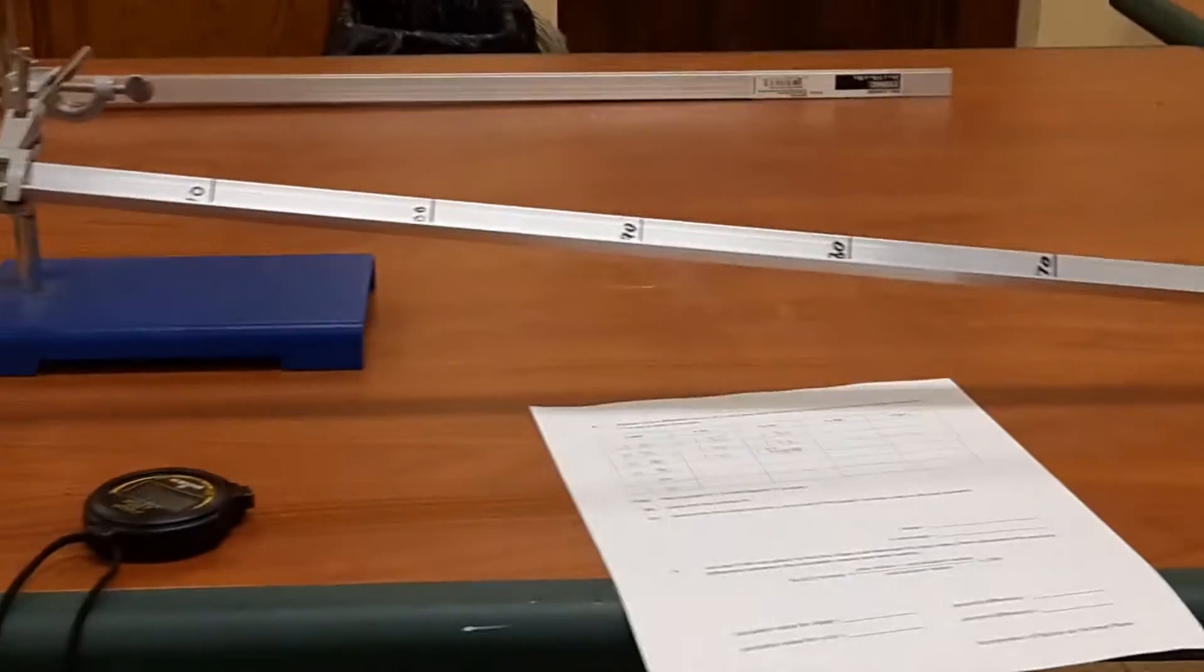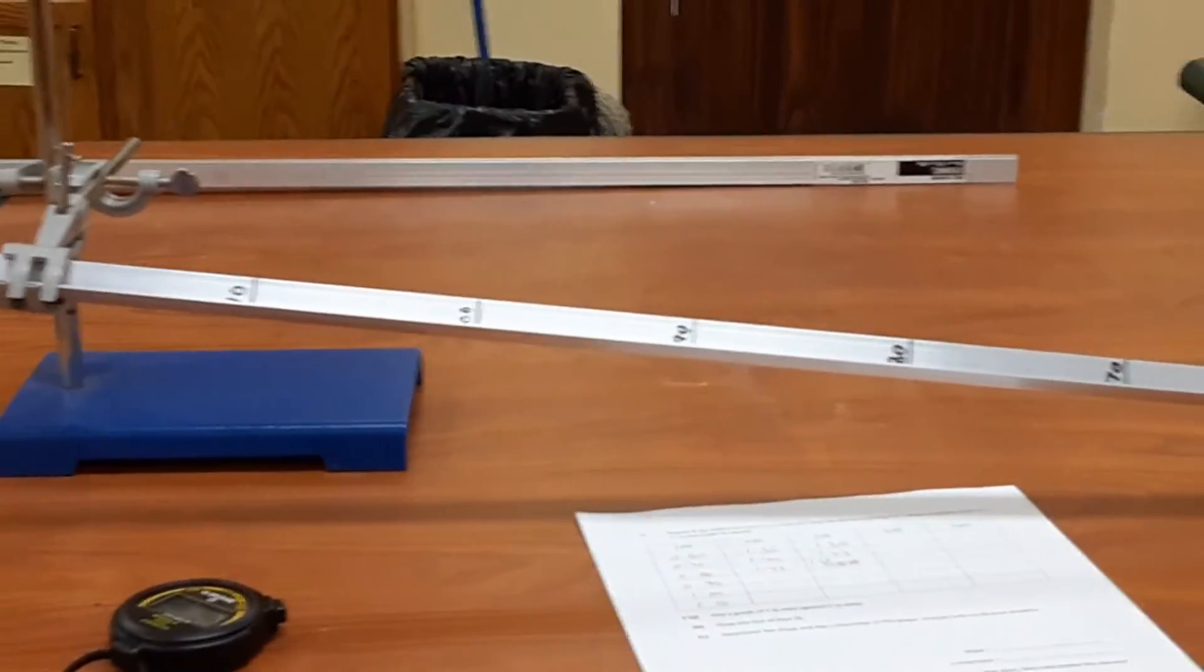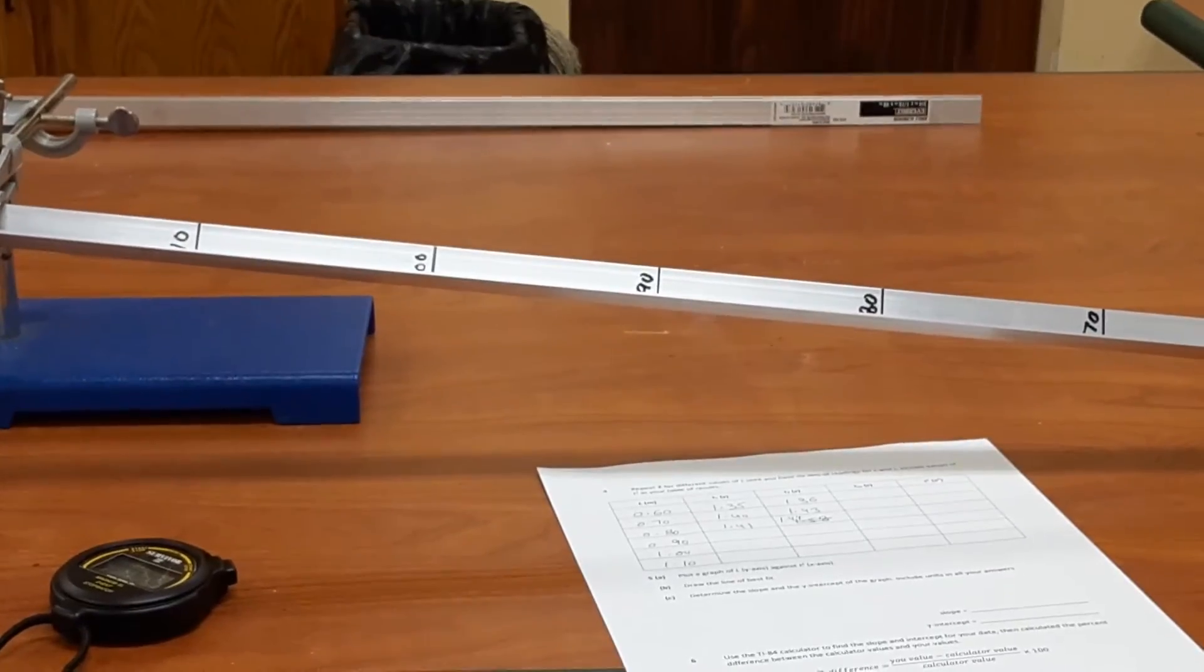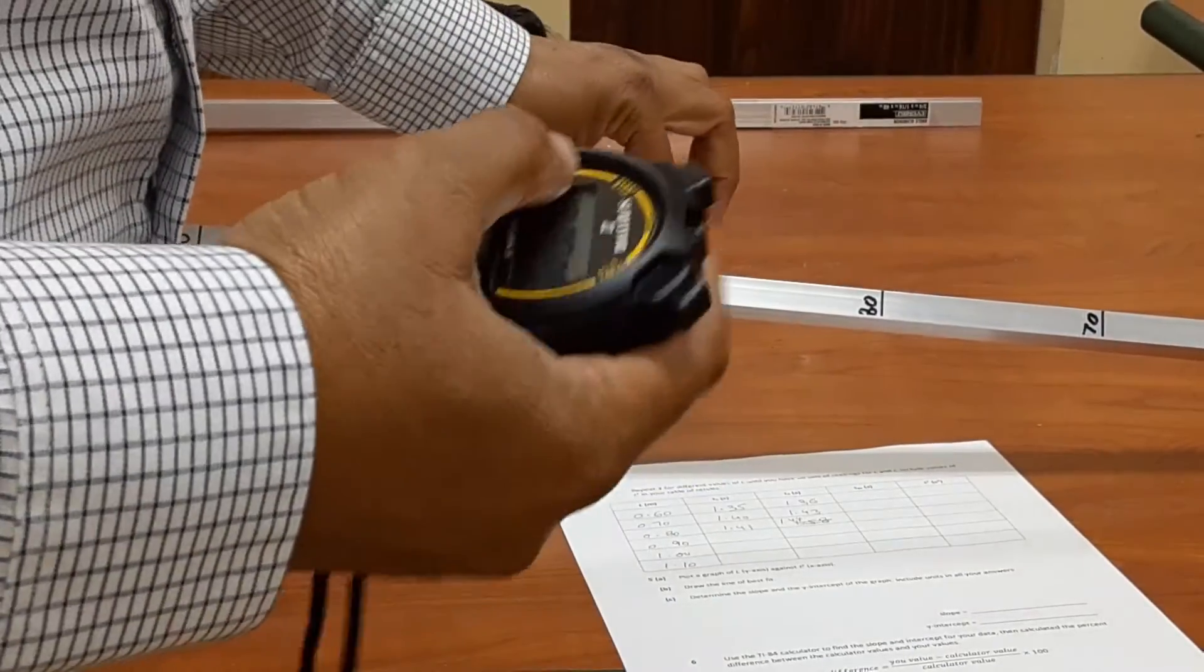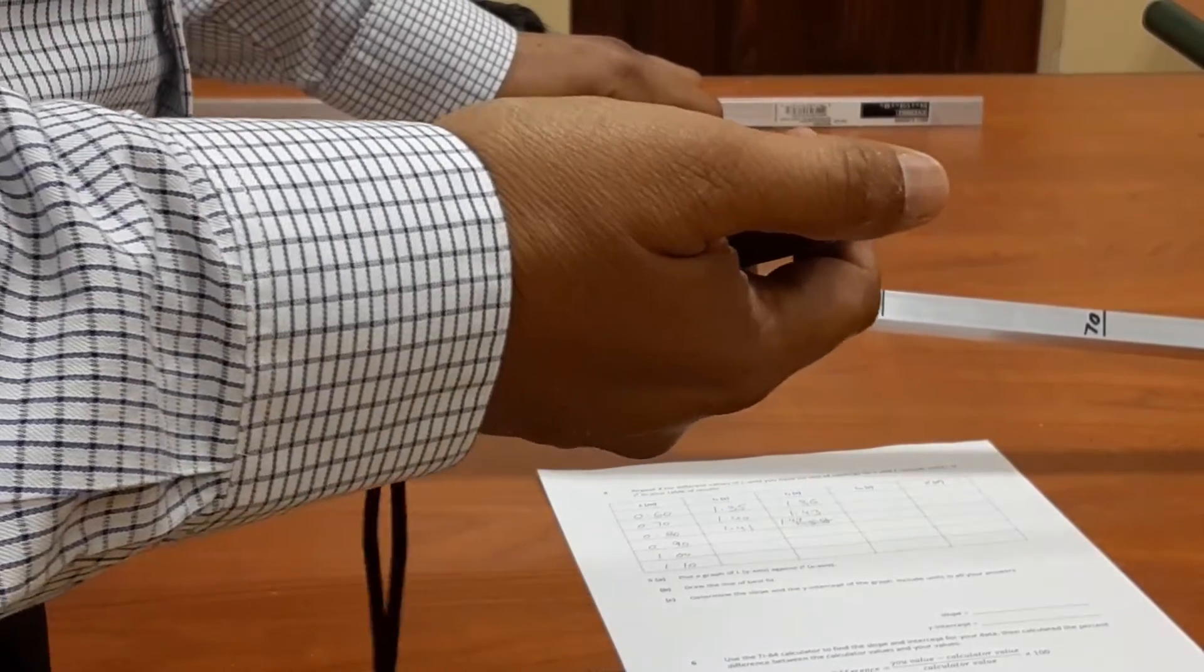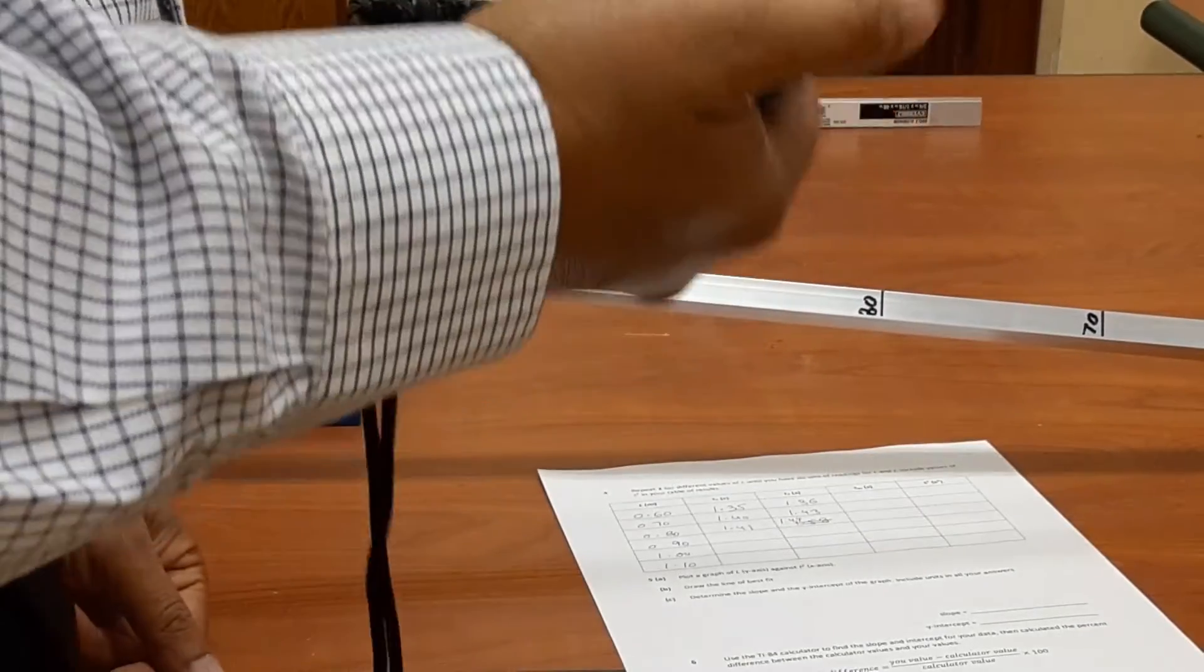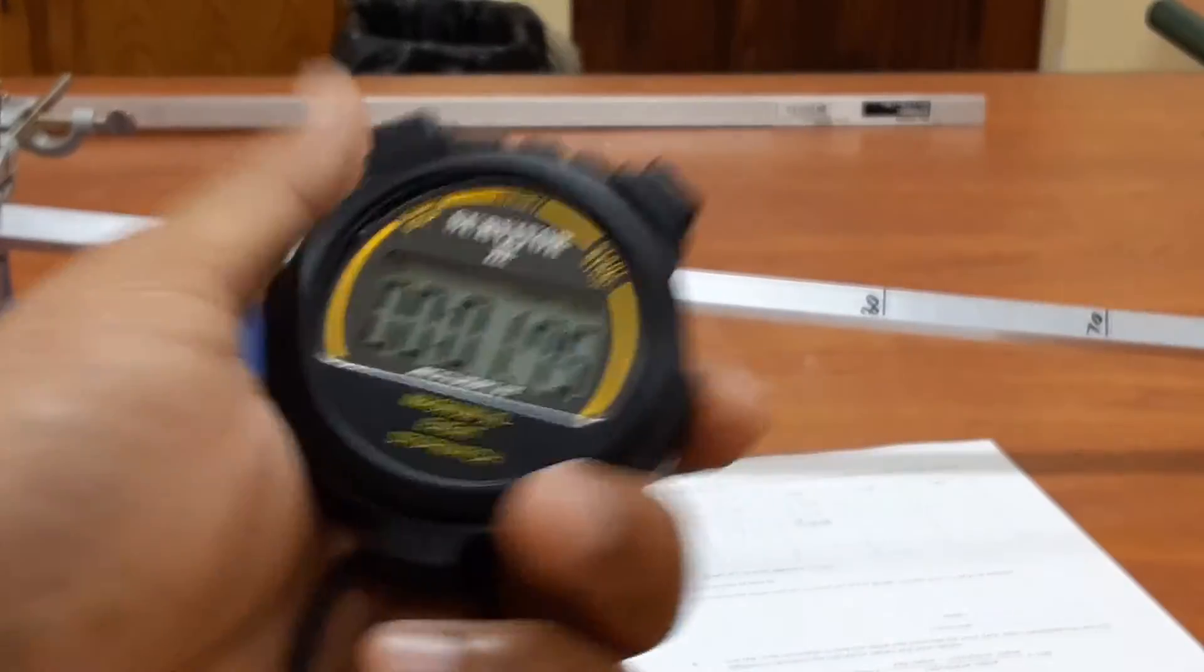So continuing with my measurements. Next, I want to let the ball start at the 90 centimeter mark and then see how much time it takes to travel down the incline. So 90 centimeter, trial one. One, two, three. So the time I have here is 1.75.